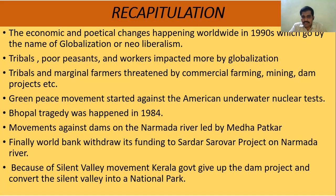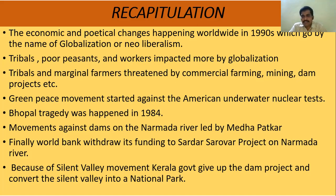Because of the Silent Valley movement, the Kerala government gave up the dam project and converted Silent Valley into a national park. Silent Valley is located in the Western Ghats in Kerala. The government had proposed to construct a dam across two rivers in Silent Valley, but after intellectuals and Kerala Shastra Sahitya Parishat conducted protests, the Kerala government gave up the dam and converted Silent Valley into a national park.